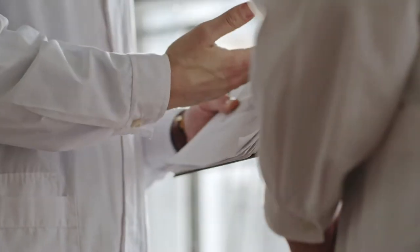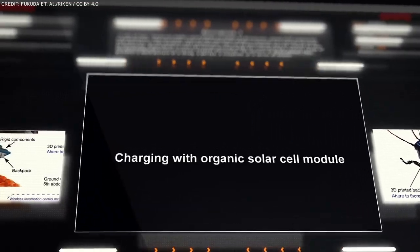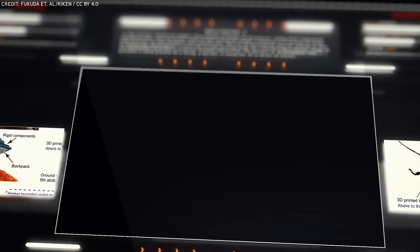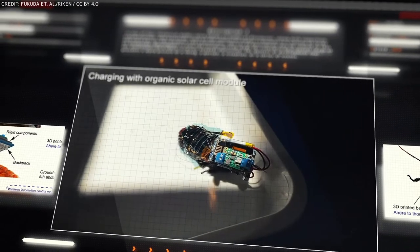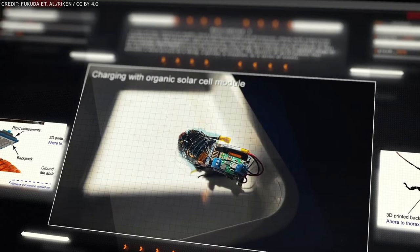They then came up with the design and created a solar-powered rechargeable system. This system had two sections, the main section containing a battery and the stimulation module was attached to the upper part of the roach's body, whereas the solar cell module was attached to the lower part of the body.